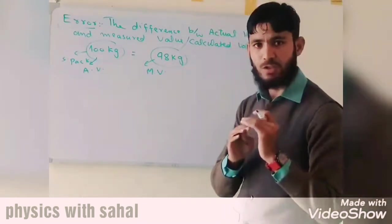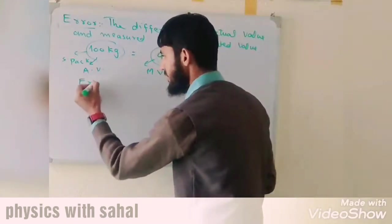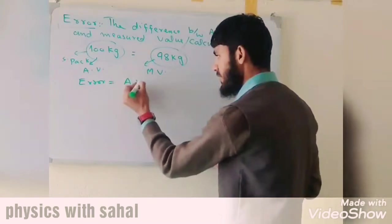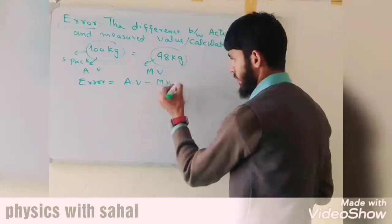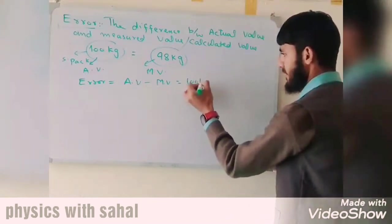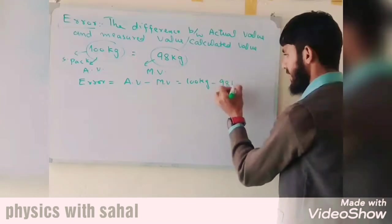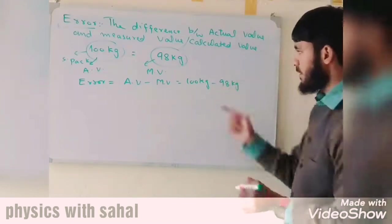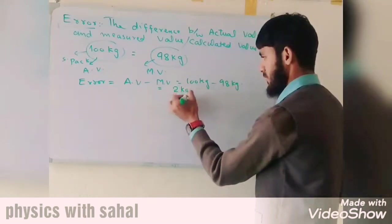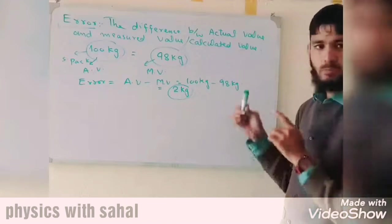Now we want to find the error between these two values. The error is equal to the difference between both values. The actual value is 100 kg and the measured value is 98 kg, so the difference is 2 kg. Therefore, 2 kg is the error in this measurement.